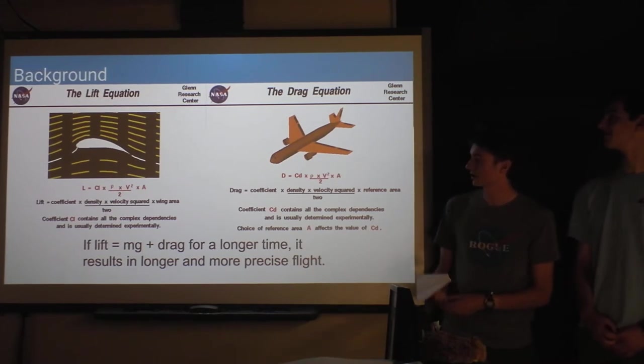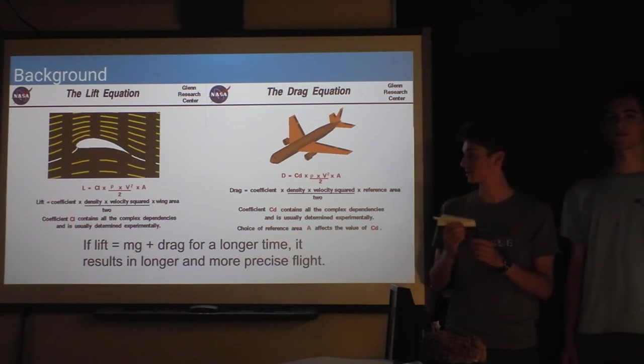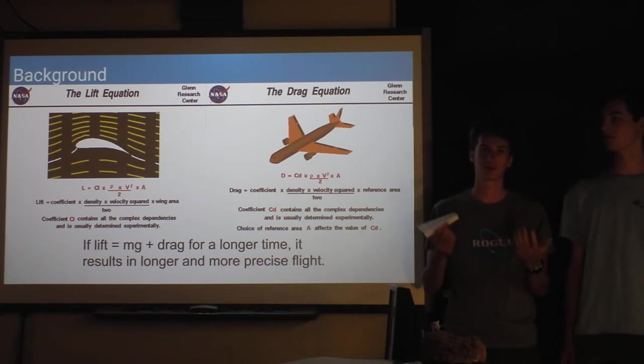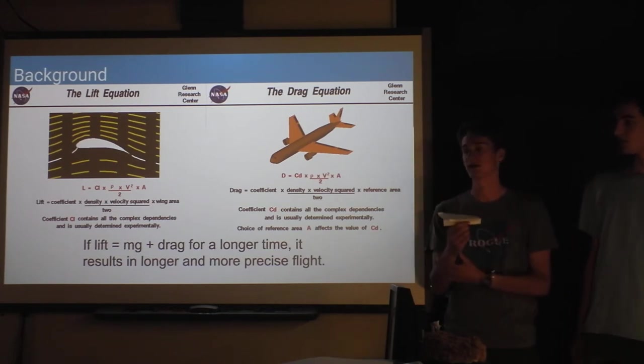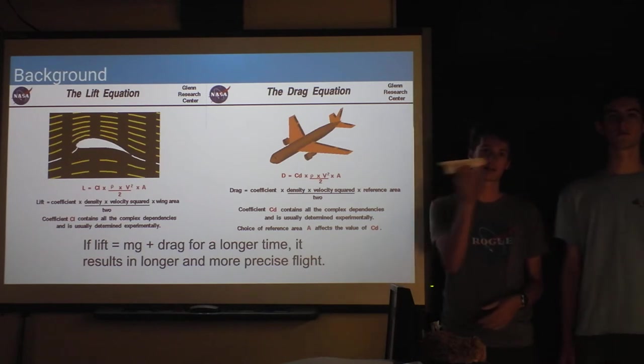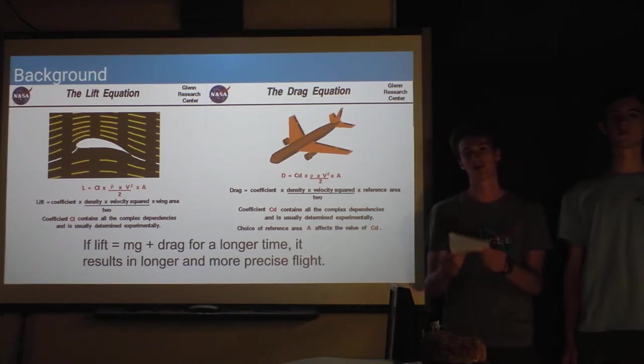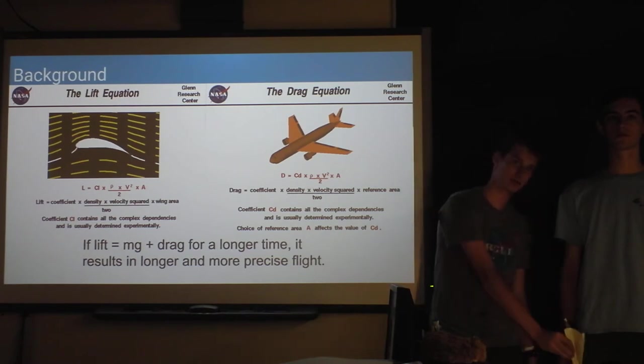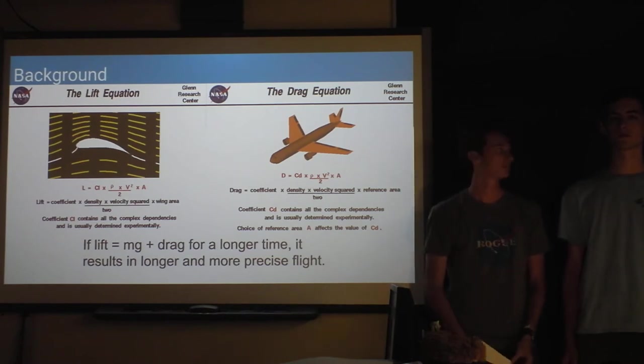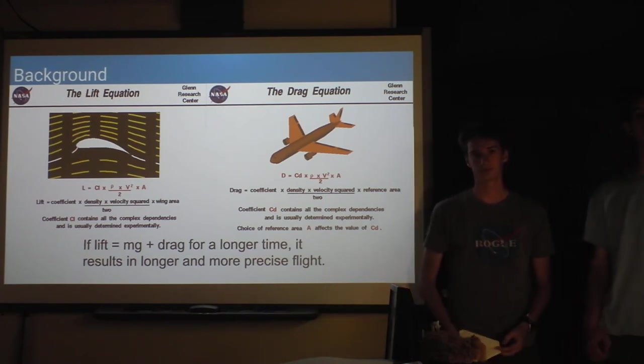So we thought that when lift was equal to MG, so gravity, the force of gravity, plus drag, it'll go for the longest time. Because if lift is too great, the plane will just go straight up and kind of fall. But if it's too small, then it'll just kind of go straight down. So the rest of the forces together should balance out that lift.